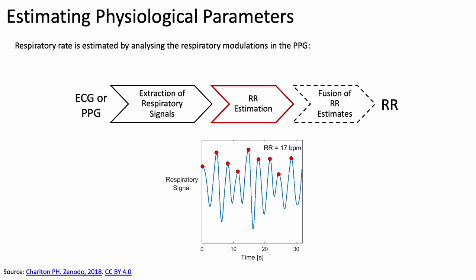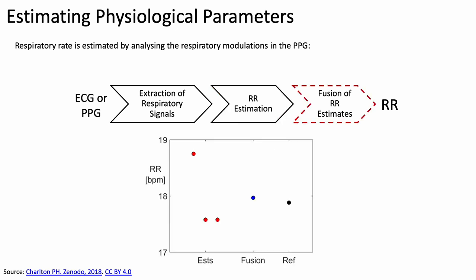Having obtained one of these signals, we can then estimate respiratory rate from it, at its simplest by counting the number of peaks over a period of time. And we can repeat this process for the three different respiratory modulations to produce three estimates shown in red. We can fuse them, perhaps by taking the average shown in blue, to obtain an estimate which in this case is closer to the reference in black than the original estimates.